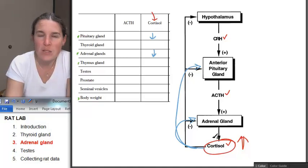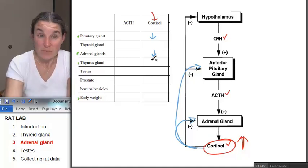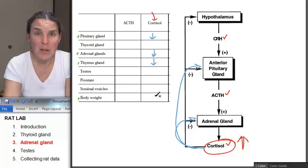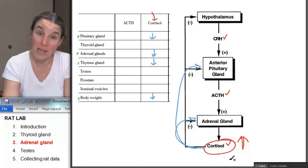What about the thymus? What are you going to expect is going to happen to the thymus? Dude, immunosuppressant. We would expect our thymus to get tiny. And what about body weight? Stress. As long as our rat doesn't stress eat, then cortisol, this excess amount of cortisol is actually going to cause our rat to lose weight.